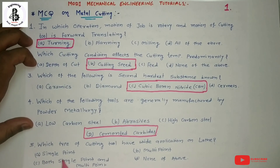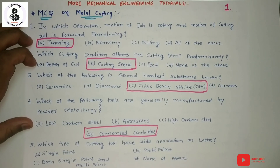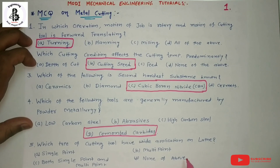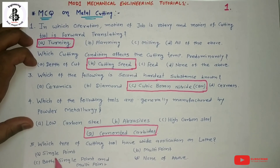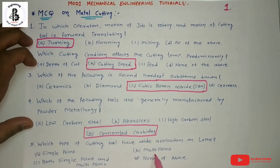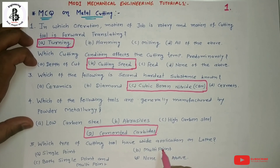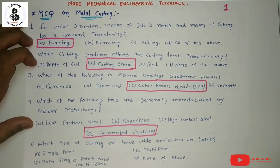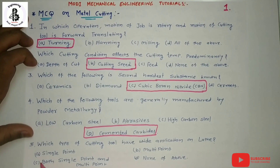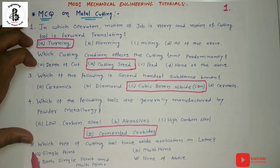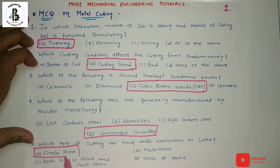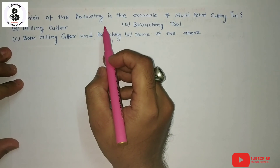Fifth question: Which type of cutting tool has wide application on a lathe? The options are: single point, multi-point, both single point and multi-point, and none of the above. Two types of tool systems are used, but in the case of lathe machines, the single point cutting tool has wide application in manufacturing and production. So the answer is single point cutting tool.